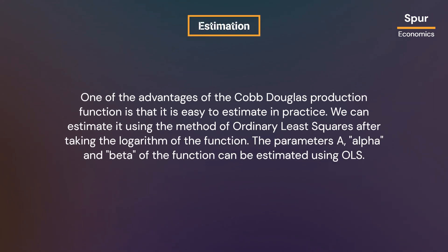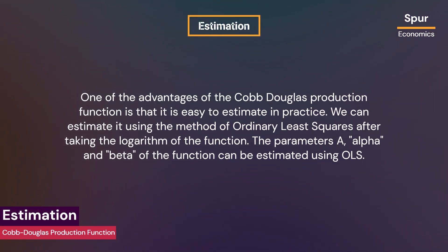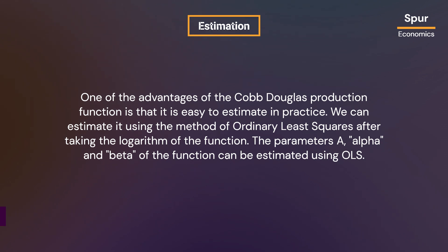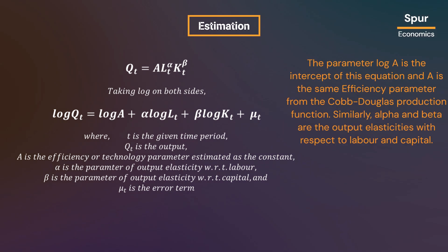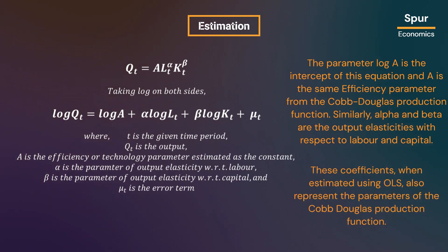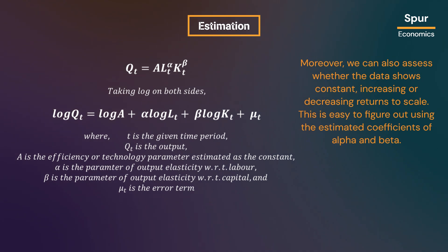One of the advantages of the Cobb-Douglas production function is that it is easy to estimate in practice. We can estimate it using the method of ordinary least squares after taking the logarithm of the function. When we take log on both sides of the function, we get the equation shown here. The parameter log A is the intercept of this equation, and A is the same efficiency parameter from the Cobb-Douglas production function. Similarly, alpha and beta are the output elasticities with respect to labor and capital. These coefficients, when estimated using OLS, also represent the parameters of the Cobb-Douglas production function.